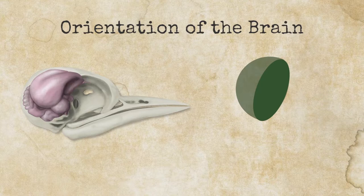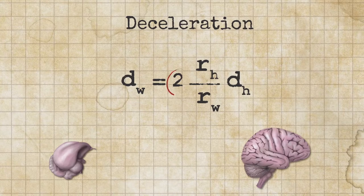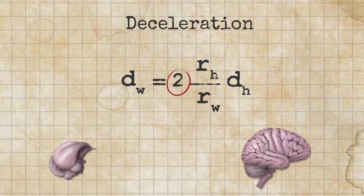For simplicity, we use a factor of two here. And we find that there's this factor of two times the radius of the human brain over the radius of the woodpecker brain times the deceleration in the human.